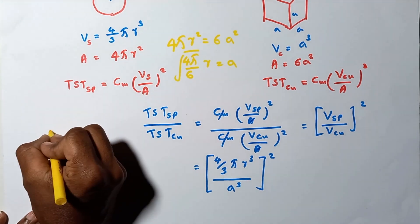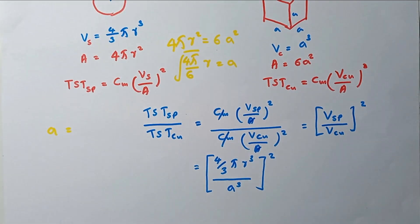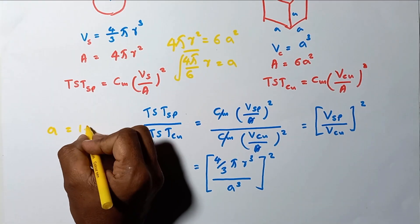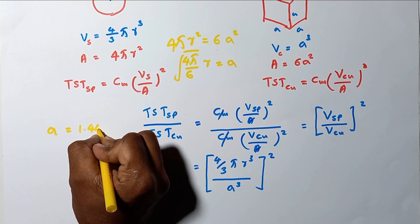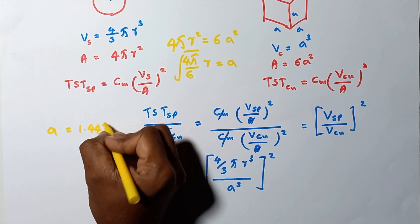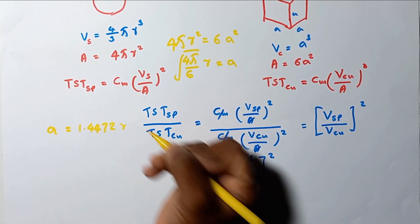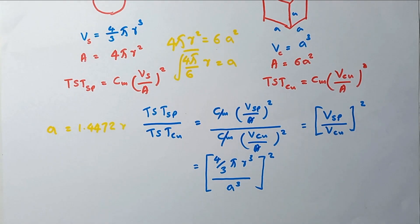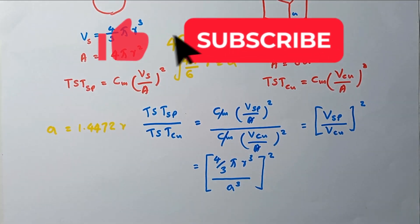That gives us a = 1.4472 × r. So a is equal to 1.4472 times r. I am going to substitute that value into the equation.